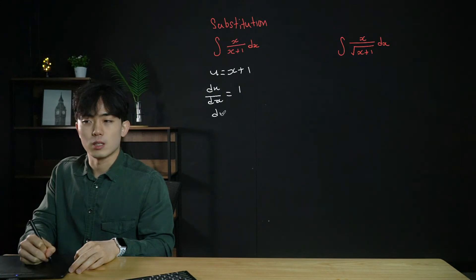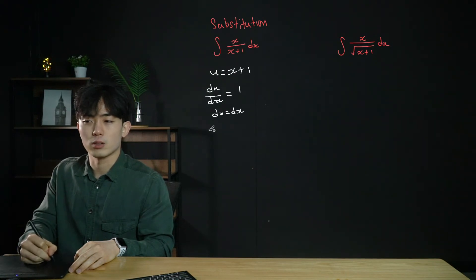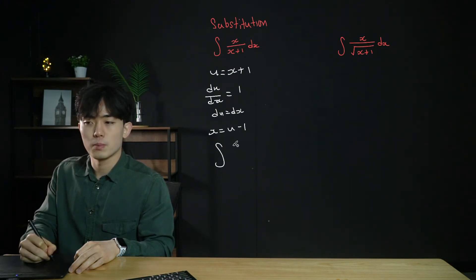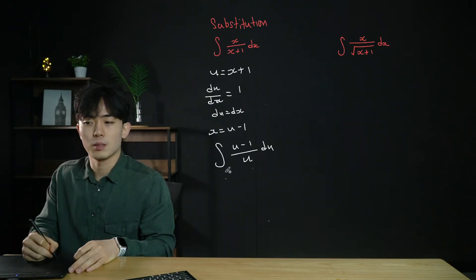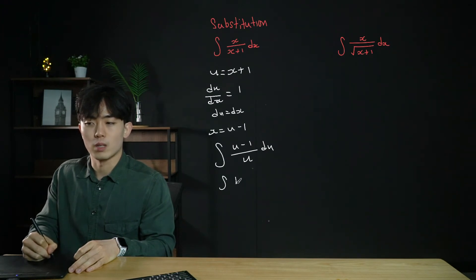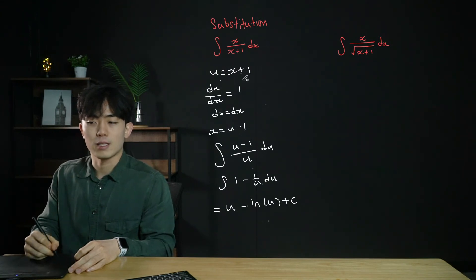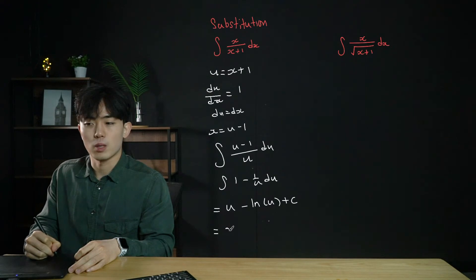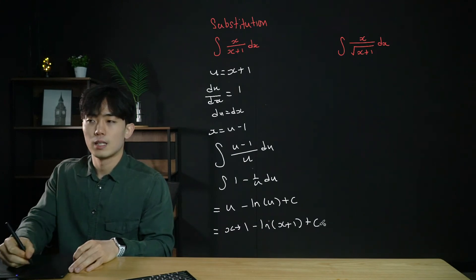We need to replace all x terms in terms of u. Differentiating u = x+1 gives du/dx = 1, so du = dx. Rearranging gives x = u minus 1. Substituting: the integral becomes (u minus 1)/u du, which simplifies to (1 minus 1/u) du. Integrating: u minus ln|u| plus c. Replacing u back: (x+1) minus ln|x+1| plus c.